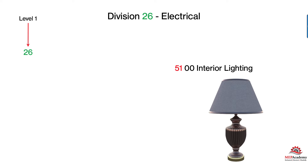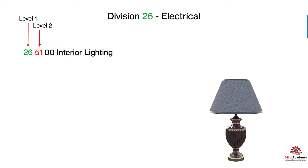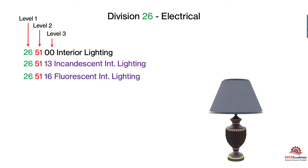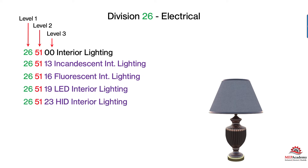Division 26, Electrical — Level 1 is your Division. If we want to talk about Interior Lighting, that's the second level — Category 51. But there's more to Interior Lighting than just that, so it gets broken down in Level 3, which is your third set of numbers: Incandescent, Fluorescent, LED, and HID Interior Lighting. Level 1 is always your Division — in this case 26 Electrical. Level 2 is defining Interior Lighting. And Level 3 defines it even further because there's more than one type.